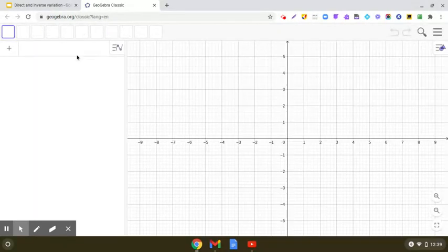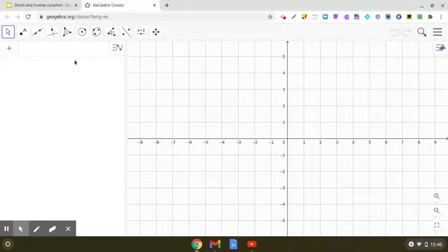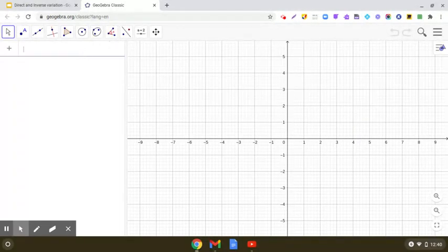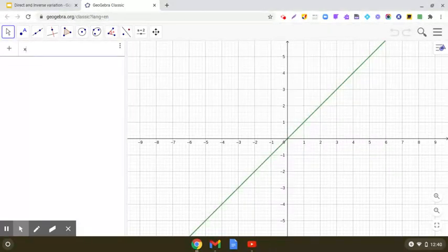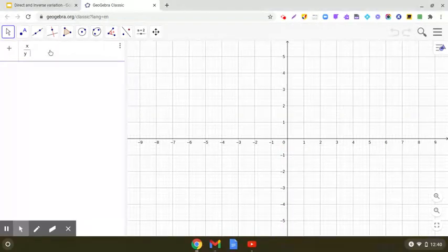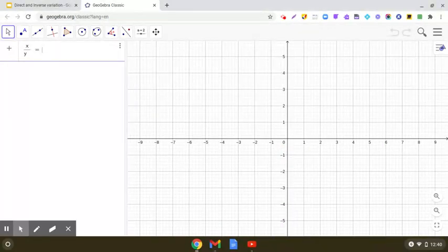Let us explore the graphs of equations of the type x upon y equals constant. These are the types of equations representing direct variation. Here you can see I am going to write an expression. For example, x upon y equals 3.